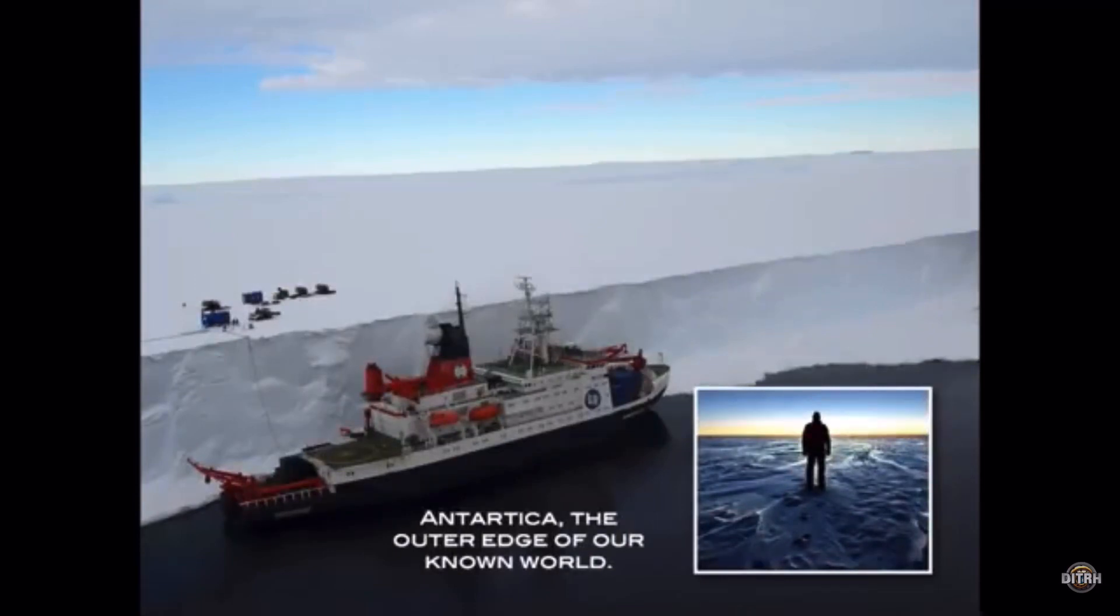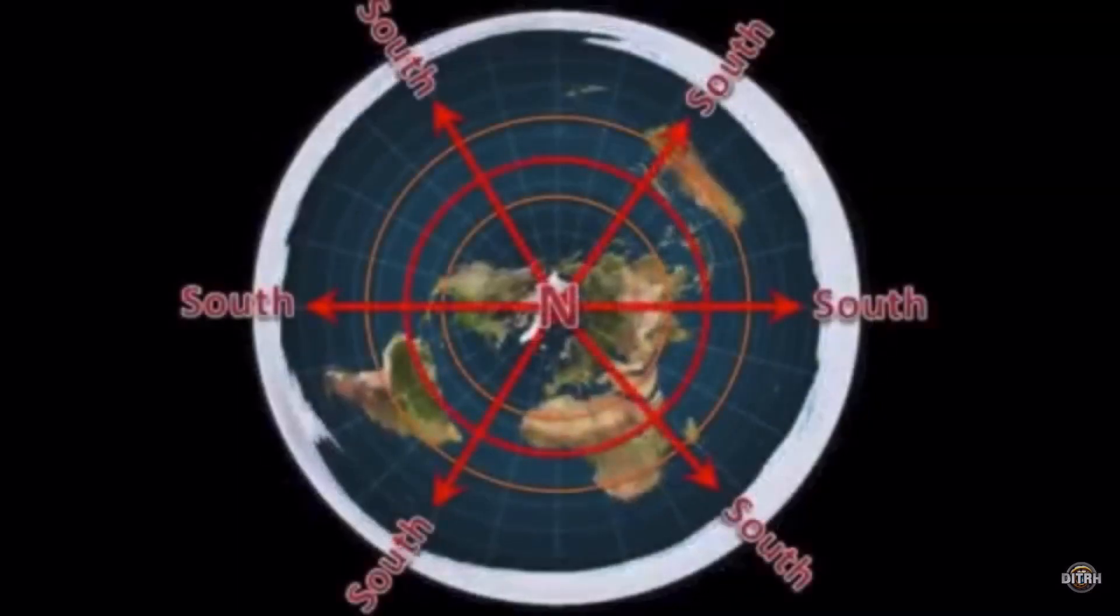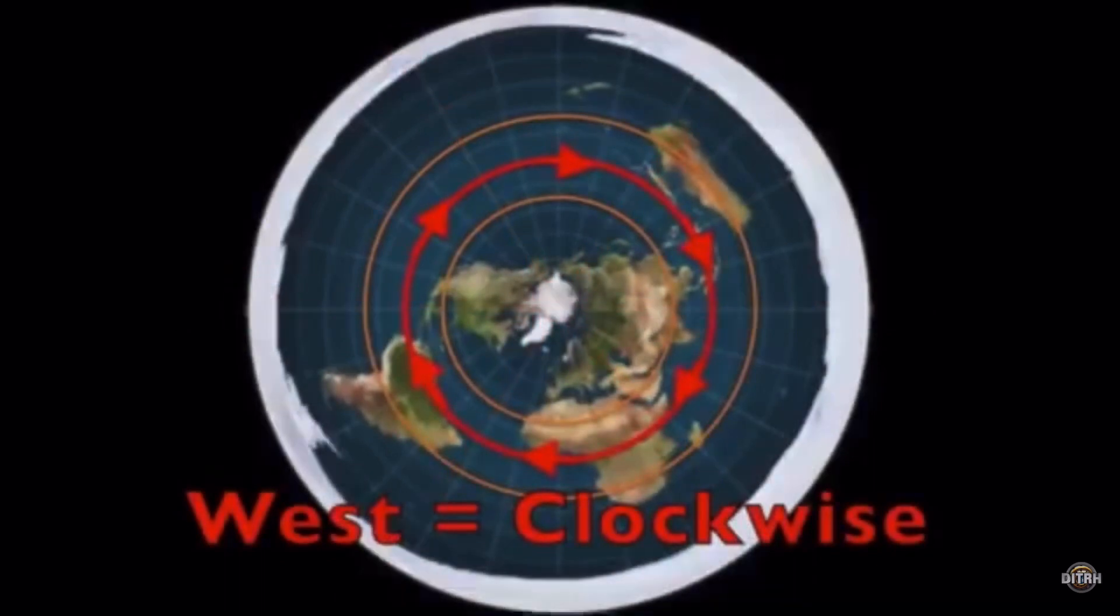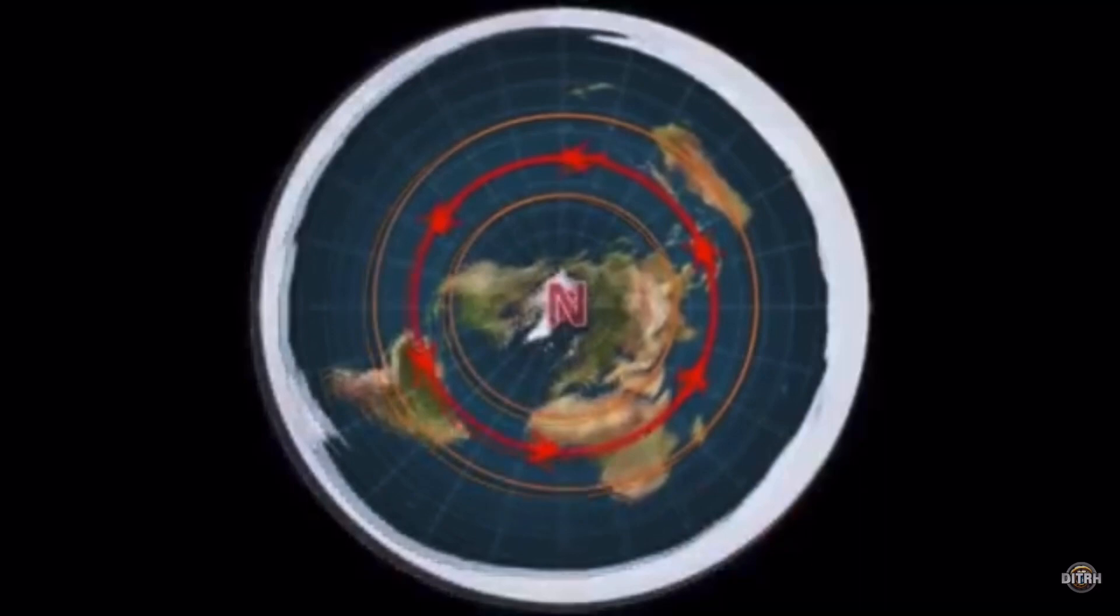And so people say, well, where's the edge? Go take a picture of the edge. You'll jump off the edge, drink bleach, whatever they say. If you go south, which is every direction away from the center point is south, you'll hit the Antarctic ice shore. And the question is, how much farther can you go and what's beyond there? Which is a whole other discussion.